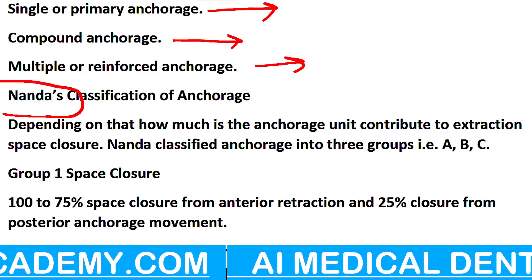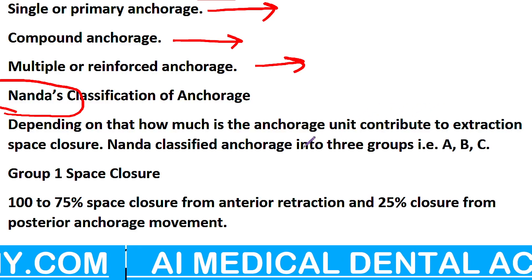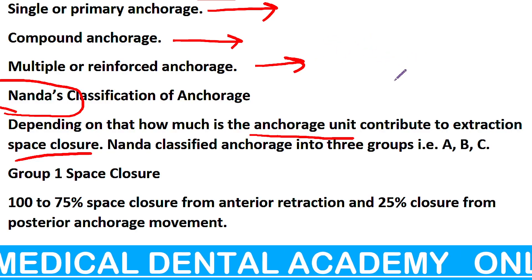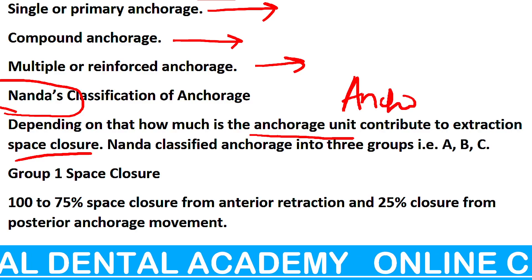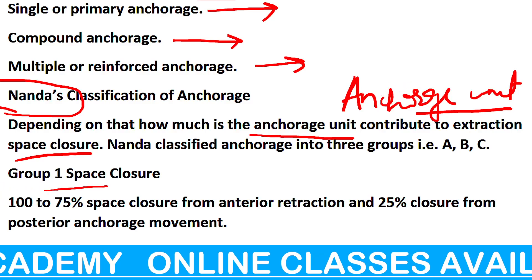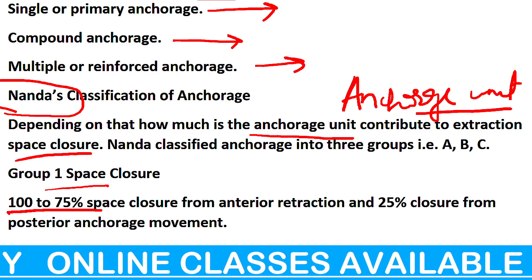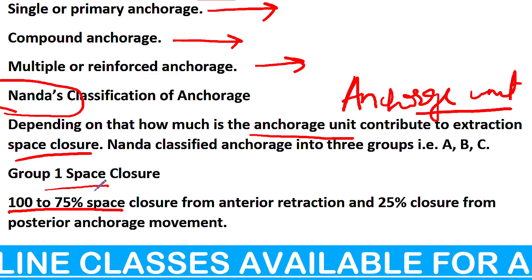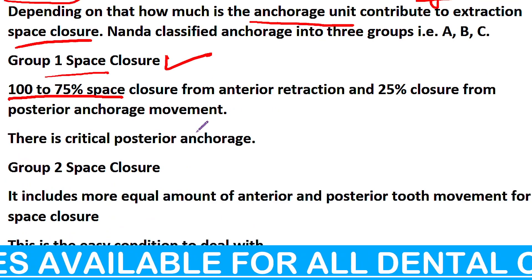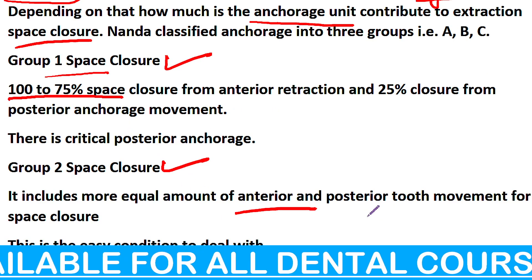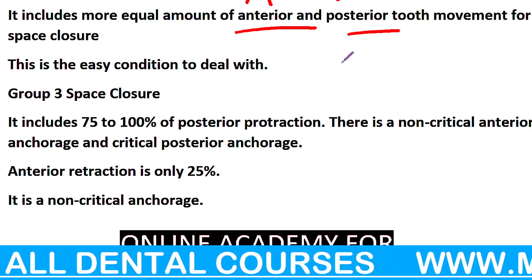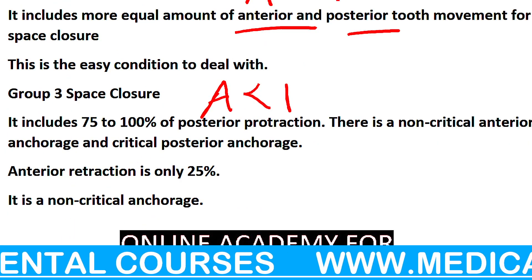Now Nanda gave another classification of anchorage — telling how much the anchorage unit contributes to the extraction space closure. वो ऐसे बता रहे हैं कि anchorage unit के हिसाब से लोग decide करेंगे कि anchorage का type क्या है। Group one space closure: 100 to 75% space closure from anterior, and 25% from posterior anchorage movement — उसको बोलते हैं Group one. दूसरे में: anterior equal to posterior. तीसरे में: anterior greater than posterior — posterior कम होगा, anterior कम होगा।